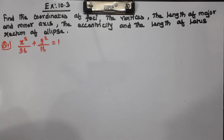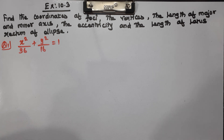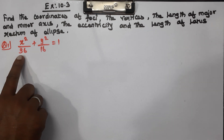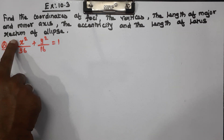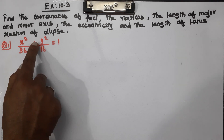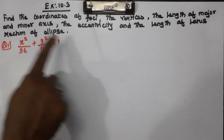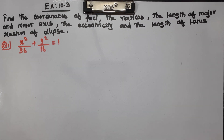Now you can find the equation. It will satisfy the equation — the ellipse equation. The general ellipse equation is x²/a² + y²/b² = 1. This is along the major axis and the minor axis.